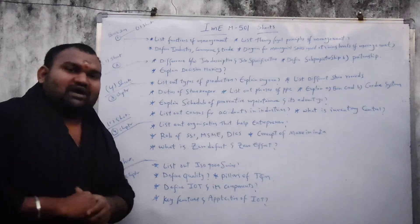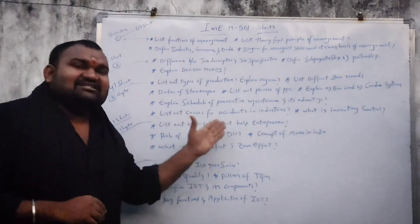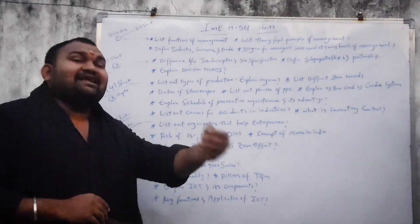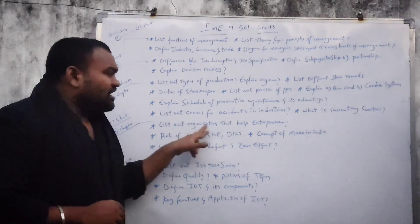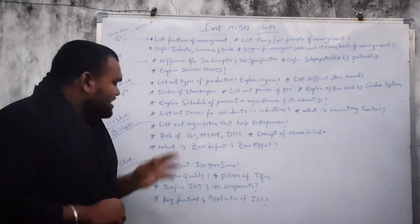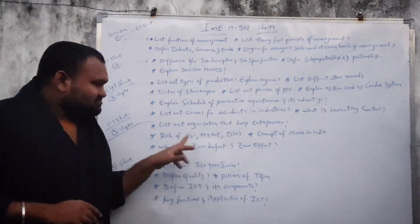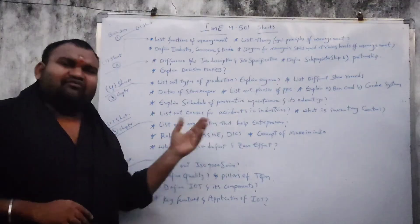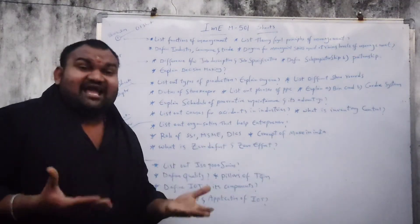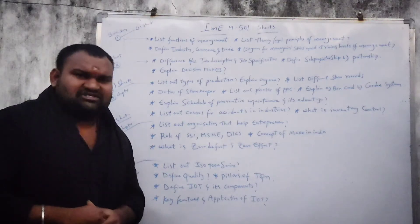Coming to the 4th chapter: list out the organizations that help an entrepreneur. The role of SSI, MSME, and DICS. The concept of Make in India — we all know already what the Make in India concept is.